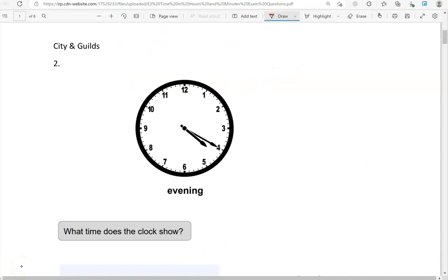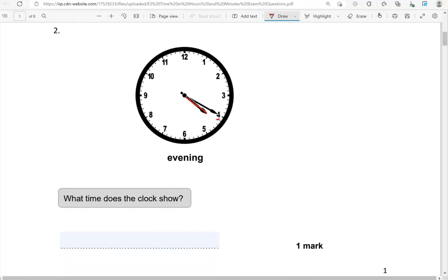What time does the clock show? Again, the short hand tells us the hours. It's just past 4, so we're going to say 4, and then 5, 10, 15, 20. We know this is in the evening, so we're going to write PM.